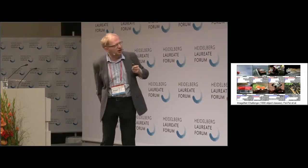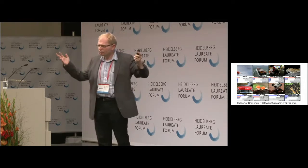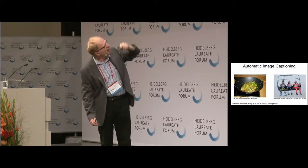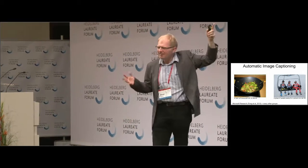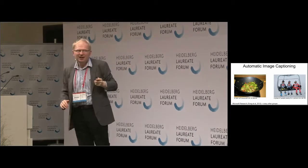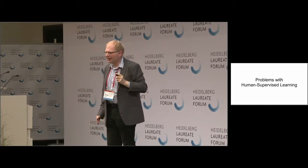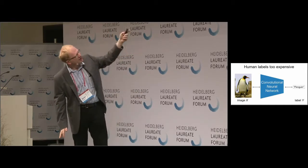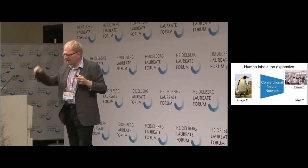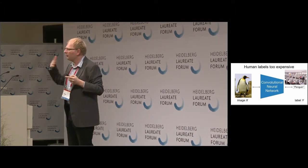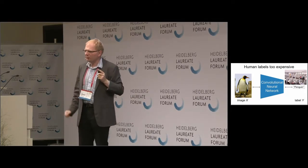You get a new image you've never seen before. The network tells you it's a penguin, but more importantly it produces a representation — a vector in some high-dimensional feature space, an embedding — that is close to the vectors for other penguins it has seen. It's learning a better distance, a better space where distances make more sense. This is where deep networks have been used a lot in our field, including the ImageNet challenge.